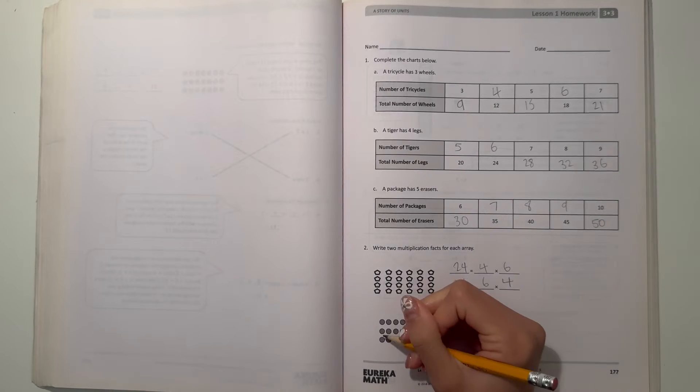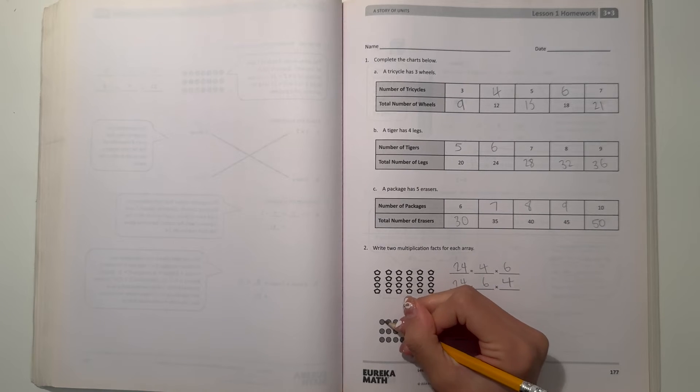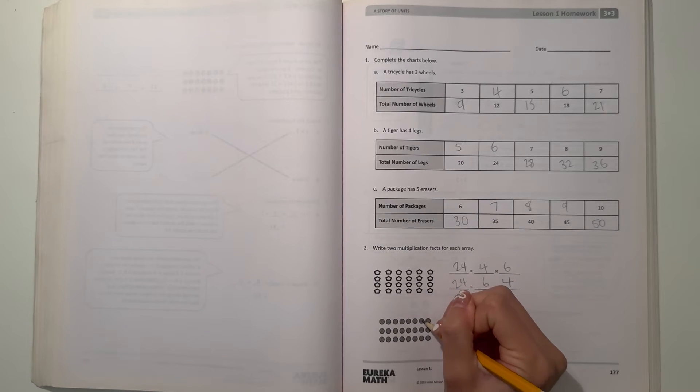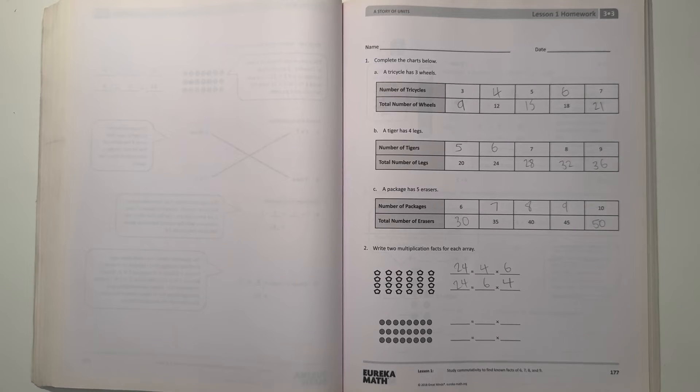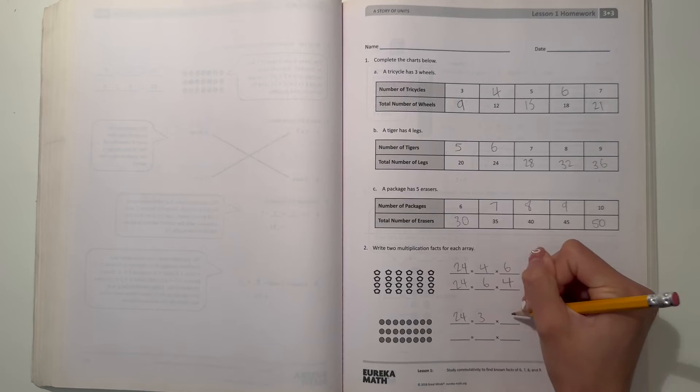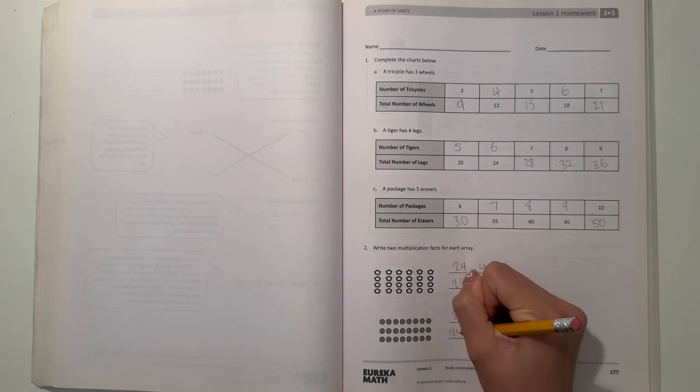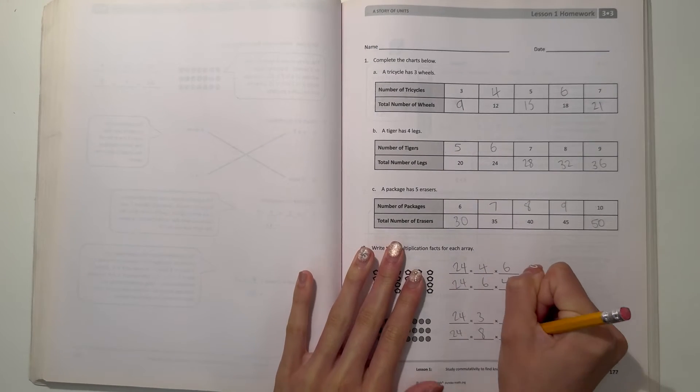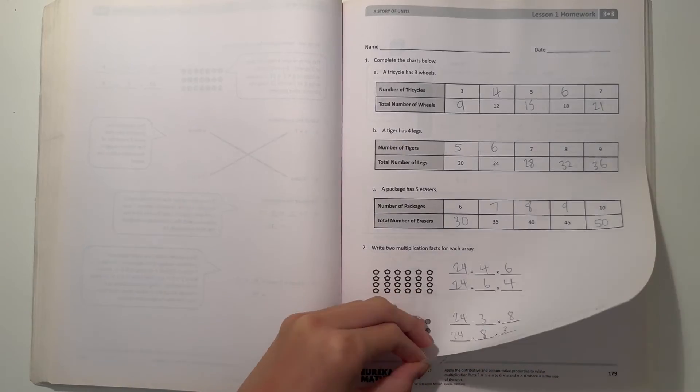And next one, we have 3 rows by 8 columns. So we have 3 times 8, which is 24 too. So 24 equals 3 times 8, and we have 24 equals 8 times 3. Alright, next page.